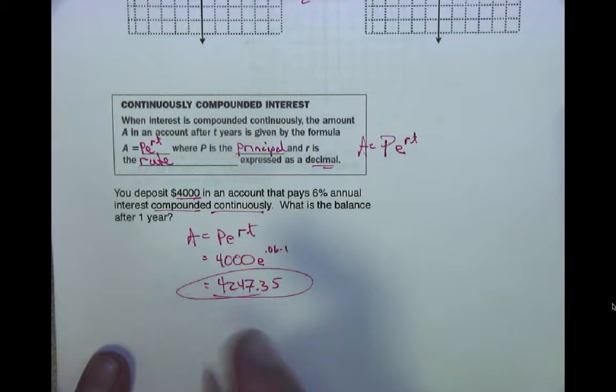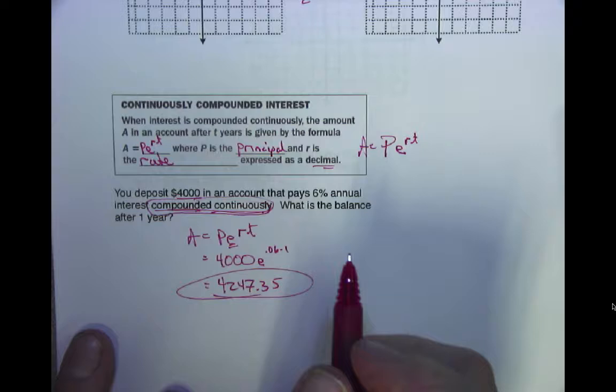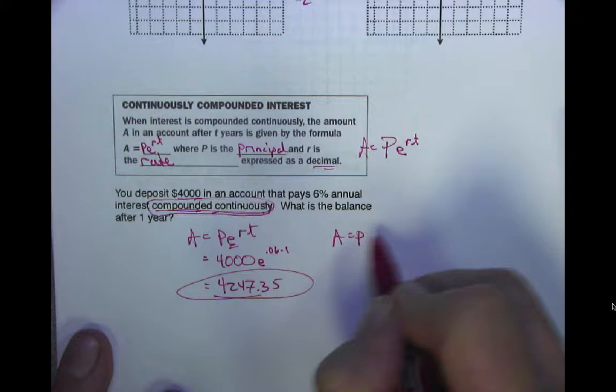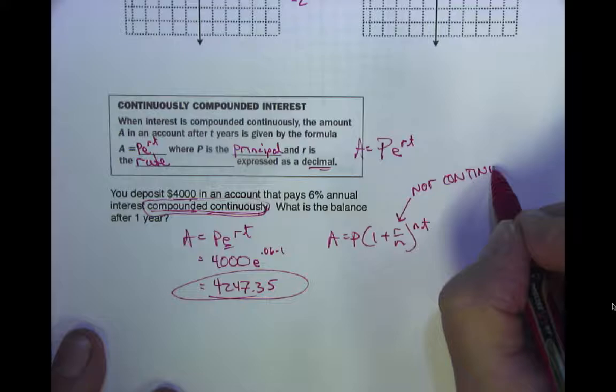So PERT is for continuous compounding. What's the key? If you see the words 'continuous' or 'continuous compounding,' that's your E — you use A = Pe^(rt). You are NOT going to use A = P(1 + r/n)^(nt). That formula is not continuous; the PERT formula is continuous.